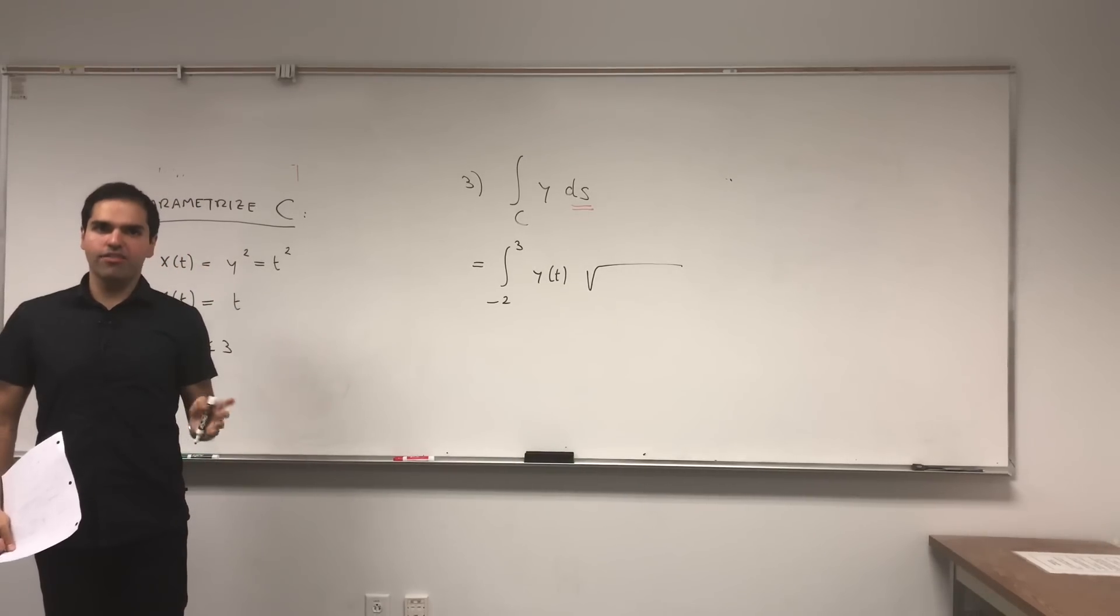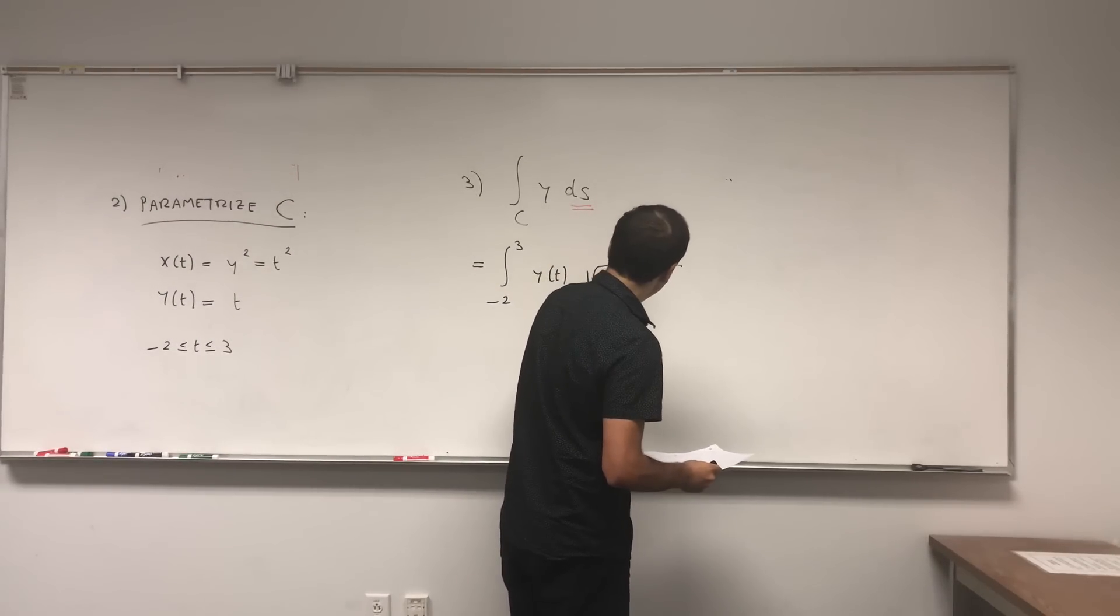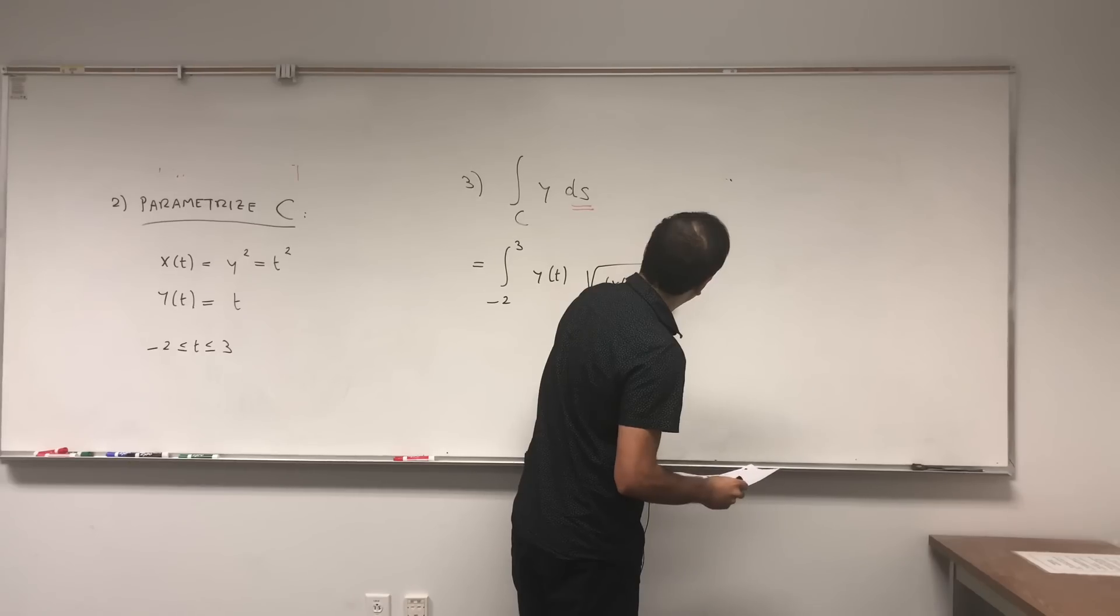And to get the length of the diagonal you use Pythagorean theorem. So this gives you X prime of T squared plus Y prime of T squared dT.